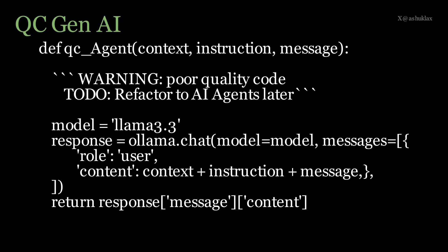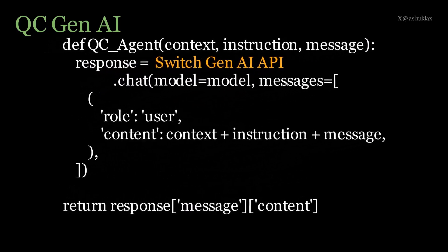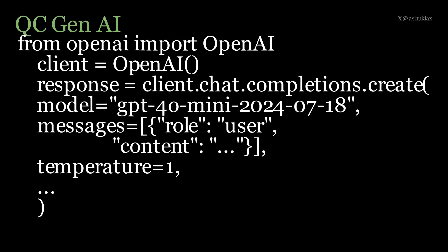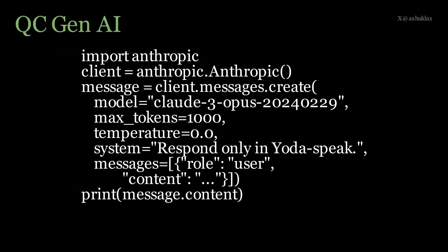Don't tie yourself to using only Ollama models. If you want to use OpenAI models, refactor this code — here are some samples if you're interested. This code walks you through using OpenAI ChatGPT models to replace Ollama-hosted models. Similarly, if you want to use the Anthropic Claude API, you can replace the original function with this code and use Anthropic Claude and other Gen AI models in place of Ollama models.